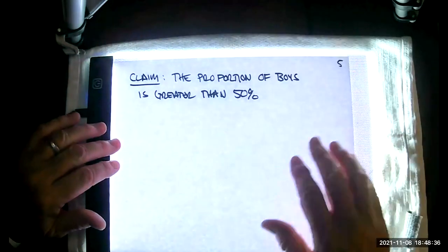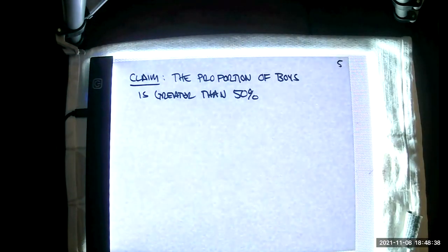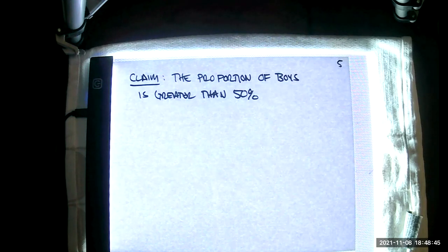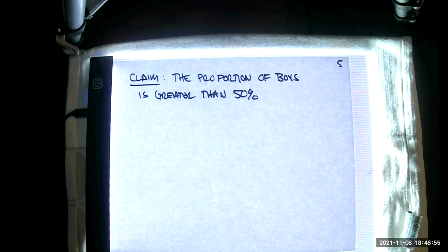Let me give you an example. Every claim we encounter, if appropriately stated, should be divisible into two completely separate outcomes: one being the null hypothesis and the other being the alternative hypothesis. Then we go on from there.